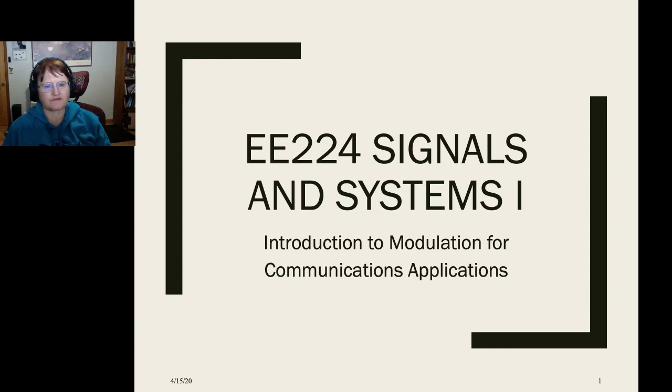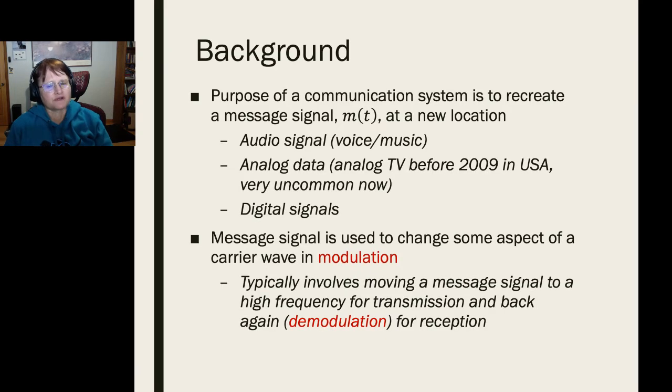The first introductory video will cover the topic of modulation for communication. The purpose of communication systems is to move a message signal, by that I mean an audio signal, a video signal, from one location to another. Examples include reading an audio file from your smartphone and playing it on your headphones, television signals transmitted via antennas or cable, and digital signals like the data you consume on your smartphones.